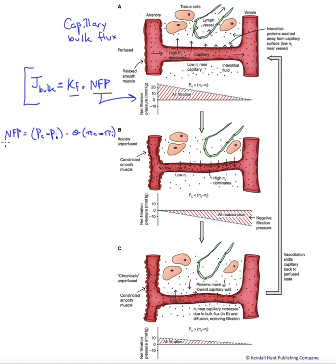The NFP equation is actually expanded down here to include all of those pressures. The P term here indicates the hydrostatic pressure, and there's one for the capillary blood hydrostatic pressure. Pi is the interstitial hydrostatic pressure, which tends to be near zero.